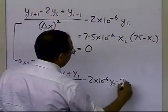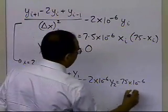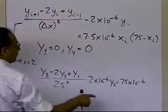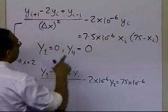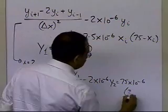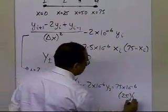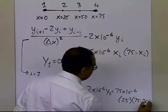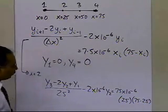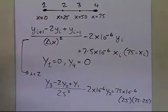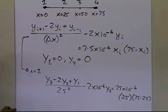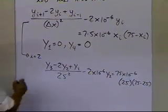This equals 75 times 10 to the power minus 6, and the value of x at node i, which is x2, is 25, times 75 minus 25. It's very important to understand what needs to be substituted and how we are substituting these for a particular node.